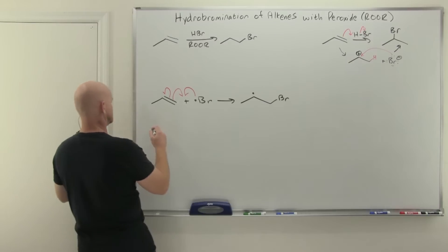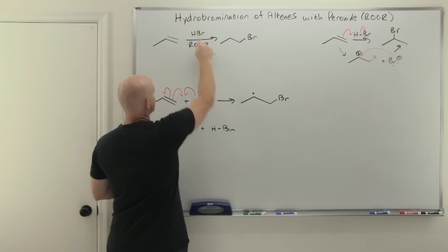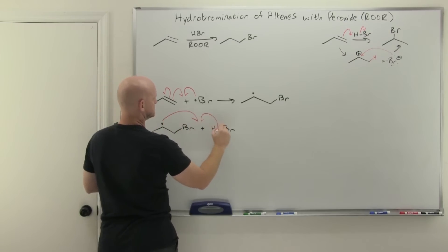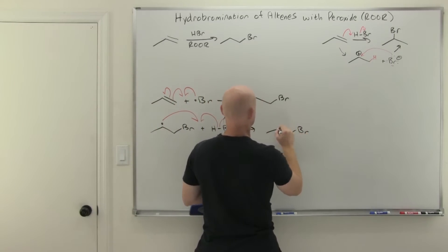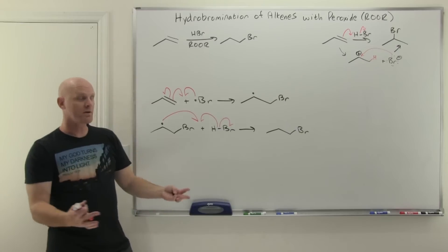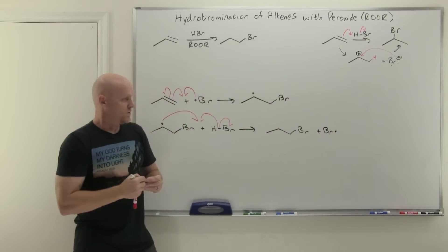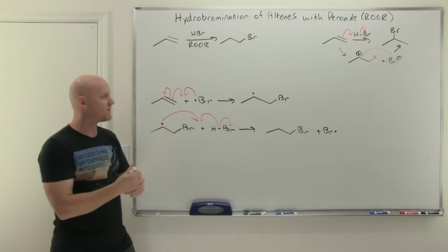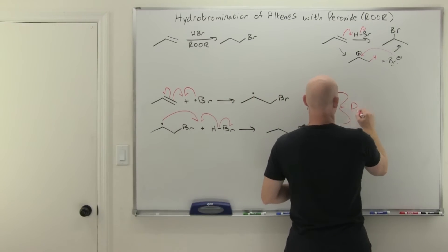That carbon radical intermediate then reacts with a molecule of HBr — one of our major reagents — forming a new bond to the hydrogen. This gives us our final product and generates another bromine radical. That bromine radical then finds another alkene to react with, and these two steps repeat over and over, producing product all along the way. These are the propagation steps.